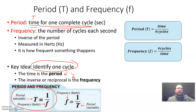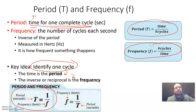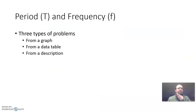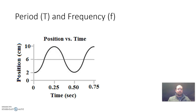There are some other equations you can get from these definitions. When we say period is time for one complete cycle, it's kind of like time per cycle. I would recommend you write these equations down because they're how you figure out what period and frequency are. We're going to go over three different types of problems: identifying period and frequency from a graph, from a data table, and from a description.